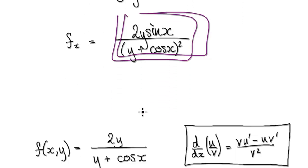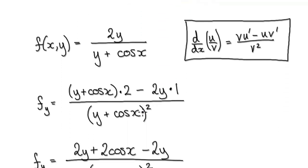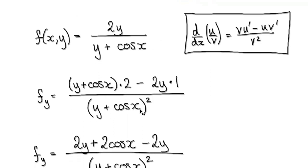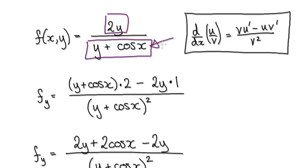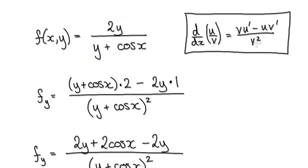Now let's find the partial derivative with respect to y. Looking at our function, we've got one block divided by another block. Since y is now our variable, this top block contains y and the bottom block also contains y, so we've got to use the quotient rule.